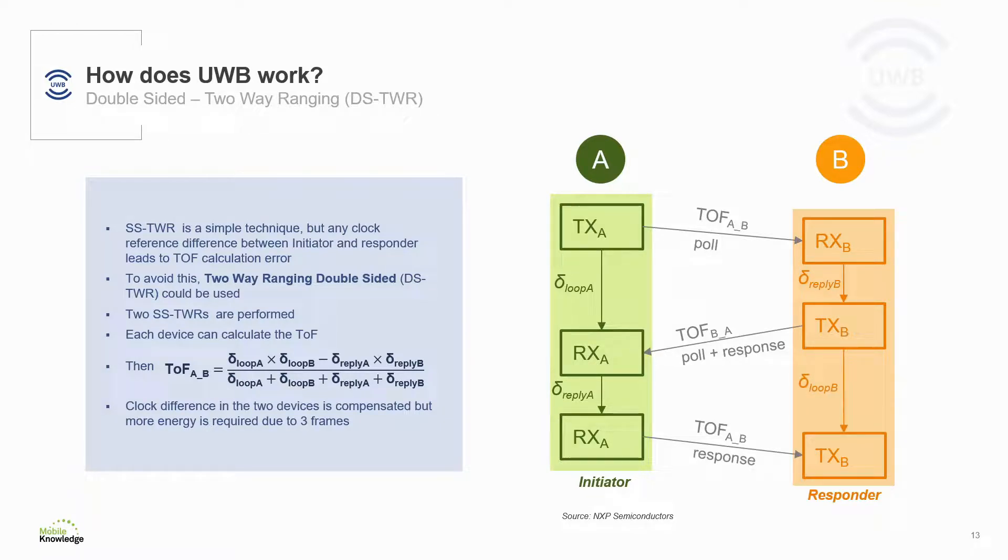By doing that, we can compensate the clock differences between A and B and deliver more accurate results. On the other hand, the energy consumption is higher because there are more pulses exchanged.